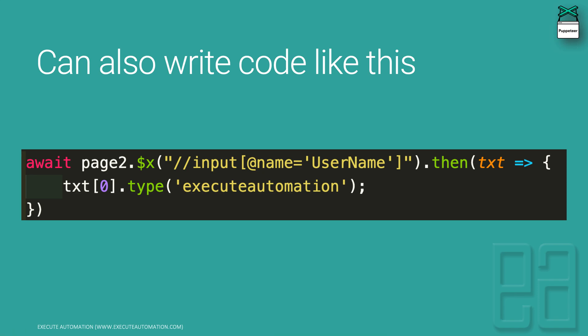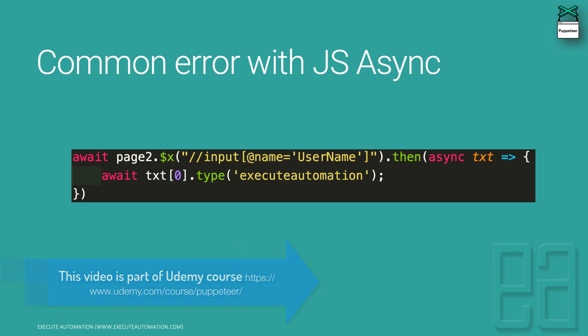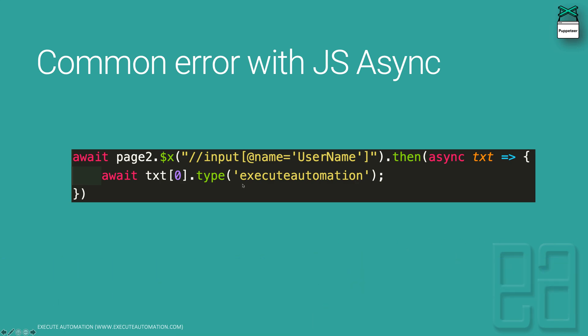You need to have async and await for each and every operation you need to perform, because we're going to execute a sequence of operations on a UI control. The correct code should look like this — using the async keyword and then an await keyword to perform the type operation. We'll see all of this in Visual Studio Code and see how things work.